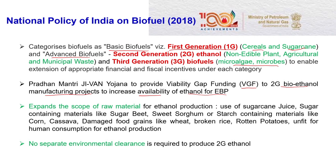The government is giving a lot of push for 10 percent ethanol blended petrol. The policy expands the scope of raw materials for ethanol production — allowing the use of sugarcane juice, sugar-containing materials such as sugar beet and sweet sorghum, starch-containing materials such as corn and cassava, damaged food grains like wheat and broken rice, and rotten potatoes unfit for human consumption. The policy says: do not throw these away — they can be a source of biomass.